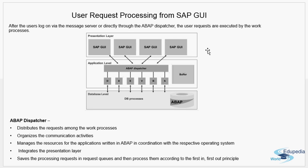In the presentation layer we have the SAP GUI. At the application level we have the ABAP dispatcher, memory buffers, and different types of work process: D for dialogue, E for enqueue, V for update, B for background or batch process, and S for spool. At the bottom we have the database layer. Apart from these work processes, we also have services like the message server, the gateway service, and the ICM.